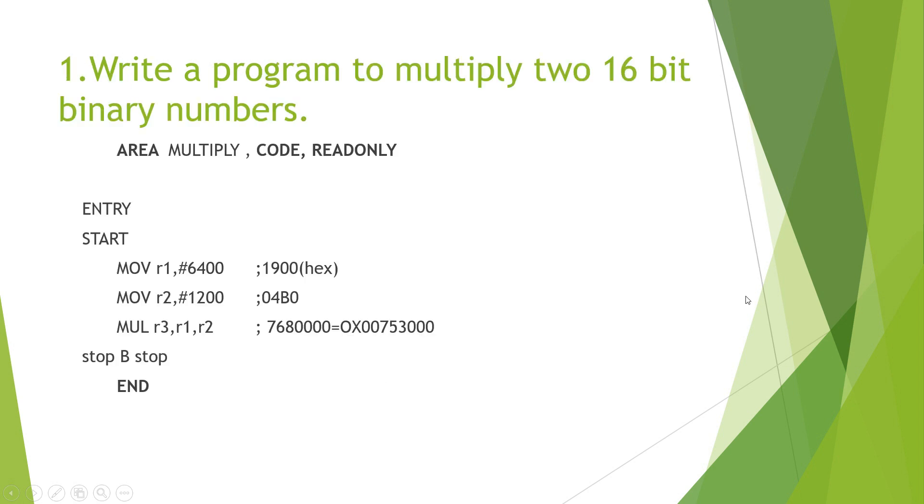Now, the very first program that we have in the course is a simple program. Write a program to multiply two 16-bit binary numbers. We are trying to multiply the numbers 6400 and 1200 in this case. So, the program always starts with the assembler directive which is AREA. The name that is given is multiply. It is user specified.